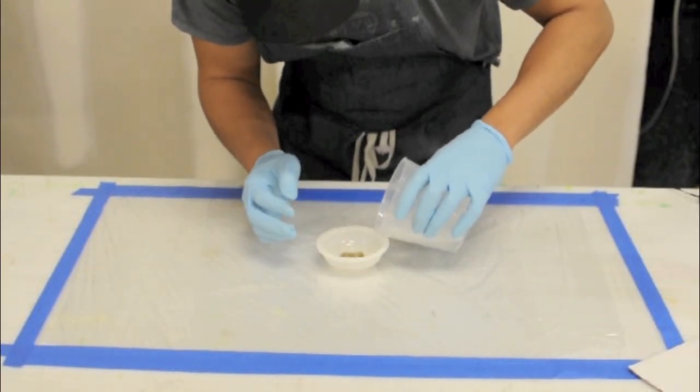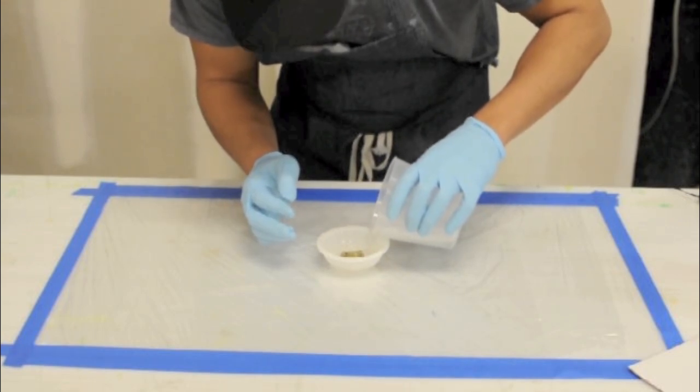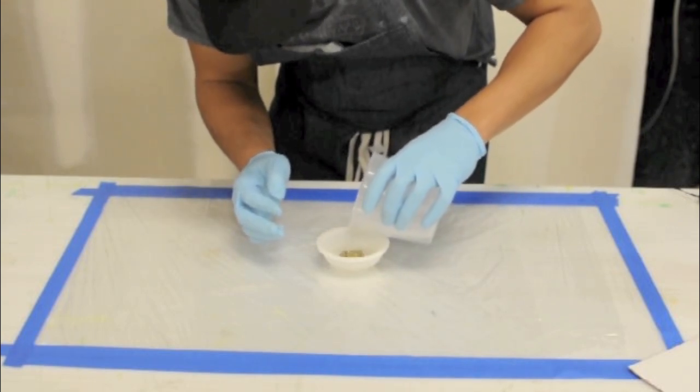Last, pour the remaining epoxy in this layer, cover your mold, and give it 24 hours to cure.